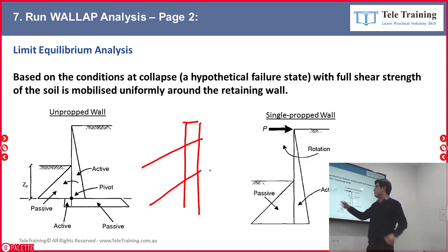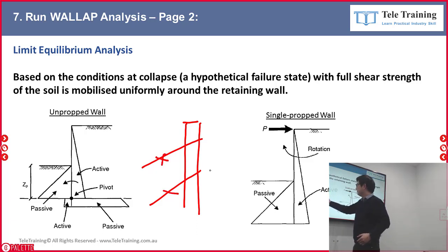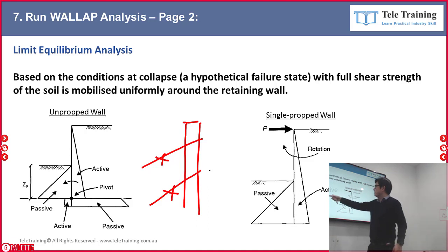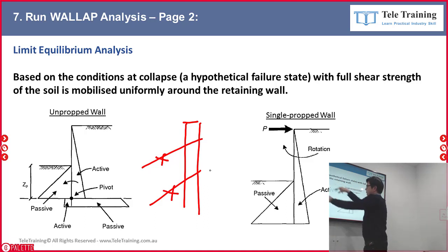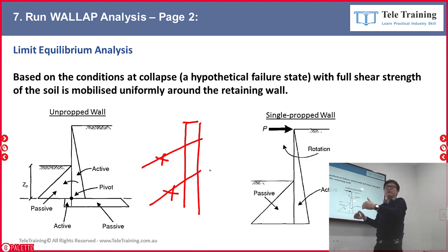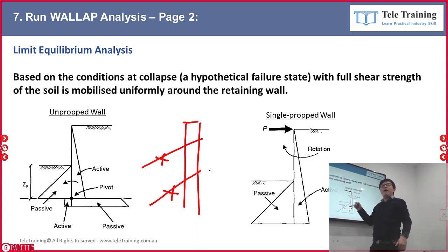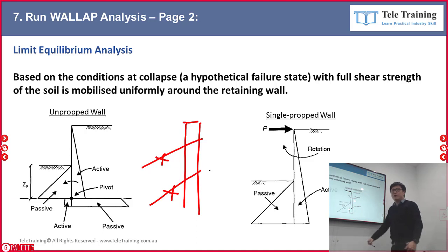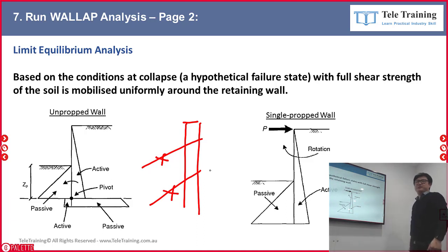This skipping happens under one condition: that your anchor is strong enough and doesn't snap. When the anchor is strong enough, there is no room to rotate and no room to slide, so there is no failure mechanism anymore — as long as you design the anchor correctly. WALLOP will give you the output anchor force so you can design the anchor accordingly.